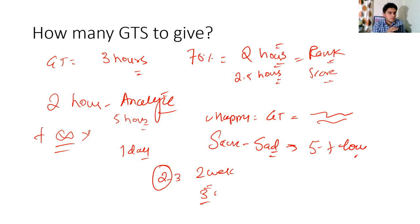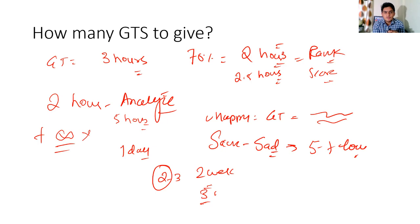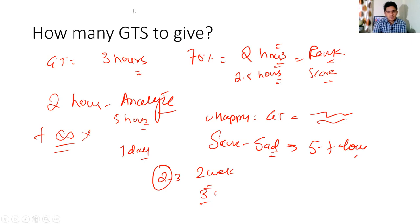Students who are toppers can give a lot of GTs because they have already completed all 19 subjects and are just assessing themselves. Your first priority should be to cover the portion because questions are not going to come from GTs but from the portion you are reading. Finish your portion first and then start giving GTs. GTs mean practice, and your practice will become perfect when your source - your reading - is perfect. That's all I want to say about GTs. I hope it helps. If you have any questions, let me know in the comment box. Best of luck, take care.